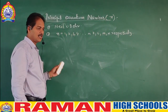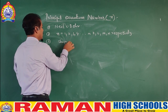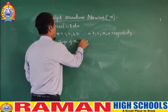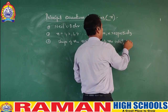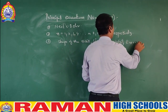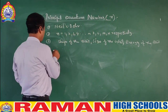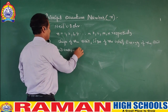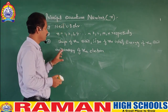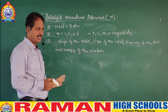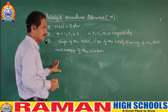What is the use of the principal quantum number? First, it gives the size of the orbit, the energy of the orbit, and also the energy of the electron. According to Bohr, the shape of the orbit is circular.